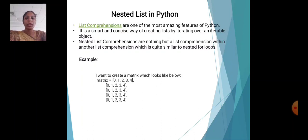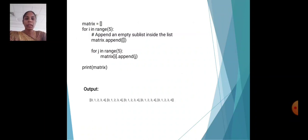For example, I want to create a matrix which looks like below. Matrix: for i in range 5, append an empty sublist inside the list. Matrix.append([]) for i, j in range 5, matrix[i].append(j). Print matrix. The output is 0, 1, 2, 3, 4.